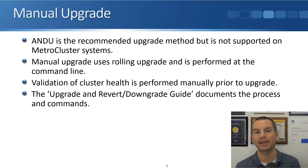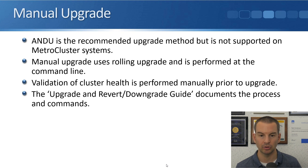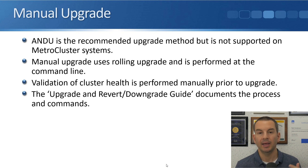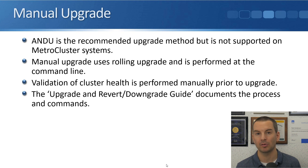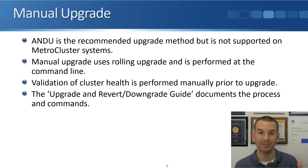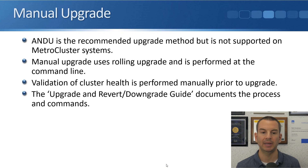ANDU using the System Manager wizard is the recommended upgrade method, but it is not supported if you're using MetroCluster. If you're using MetroCluster, you have to do a manual upgrade. That uses a rolling upgrade where nodes are upgraded one at a time, performed by you at the command line. Validation of cluster health is also performed manually prior to the upgrade, rather than being automated by System Manager. All the commands and the entire process are documented in the Upgrade and Revert Downgrade Guide, which you can get from the NetApp website.